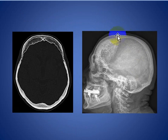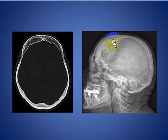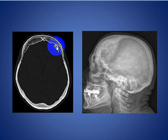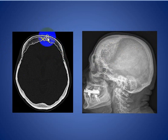As we see here on this lateral skull X-ray, there is diffuse thickening of the frontal region with hyperostosis, and it is limited by the coronal suture. On the axial CT scan, there is thickening of the bifrontal region, and it is usually symmetrical.